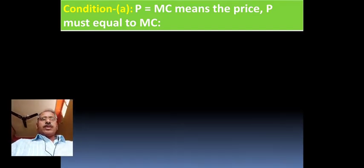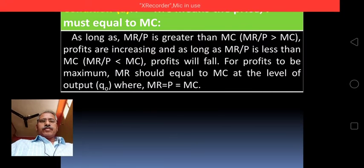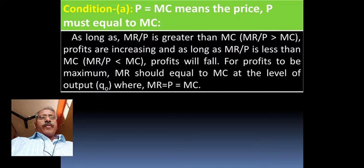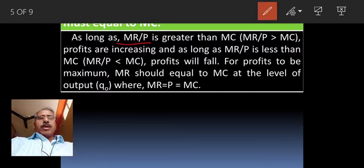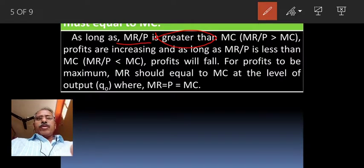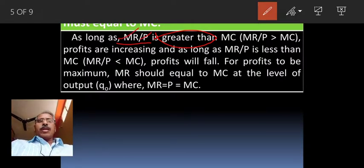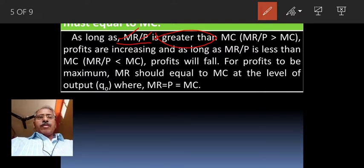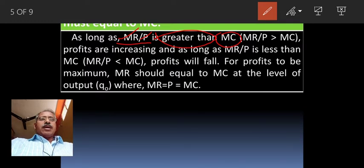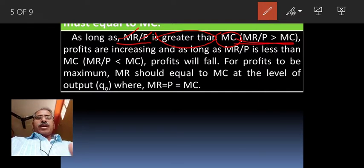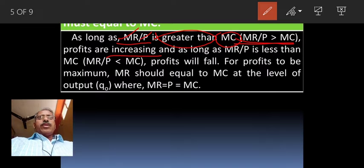As long as marginal revenue and price is greater than marginal cost—where marginal revenue and price are both greater than MC—profits are increasing. When marginal revenue and price are greater than marginal cost, the profit will be higher.